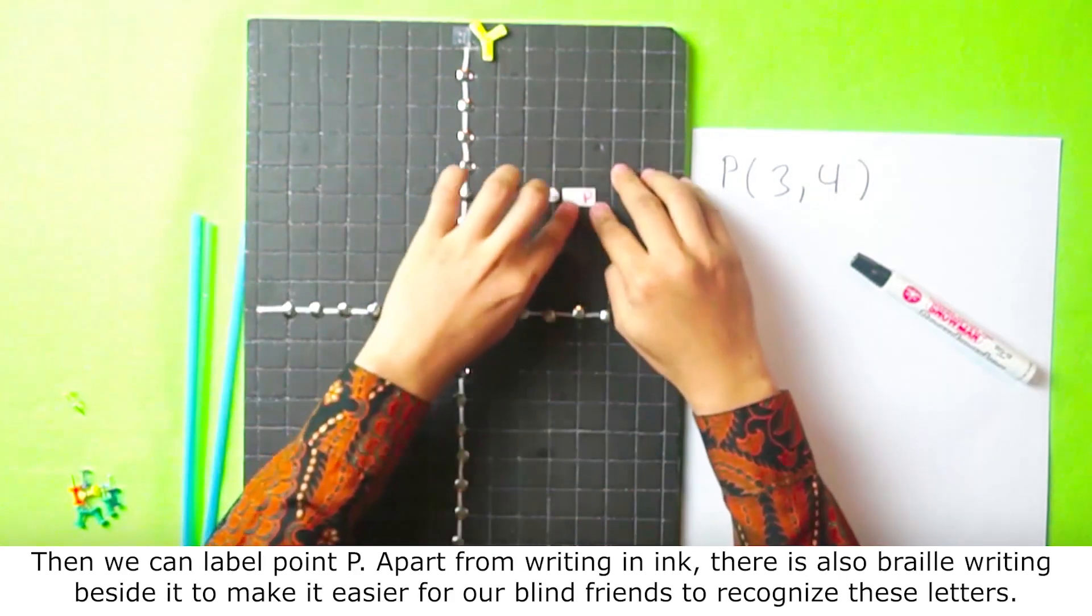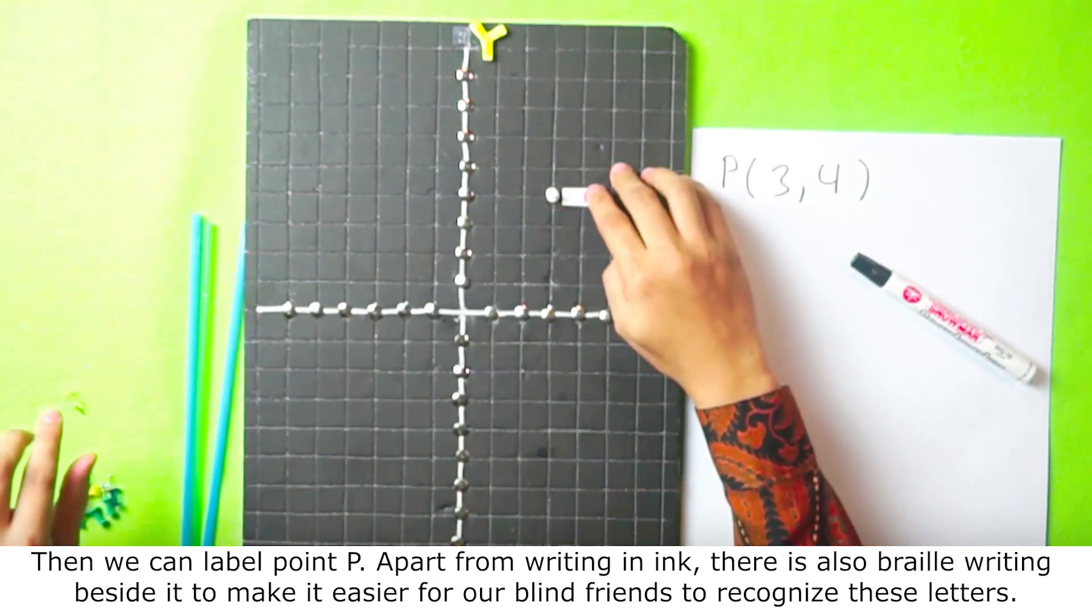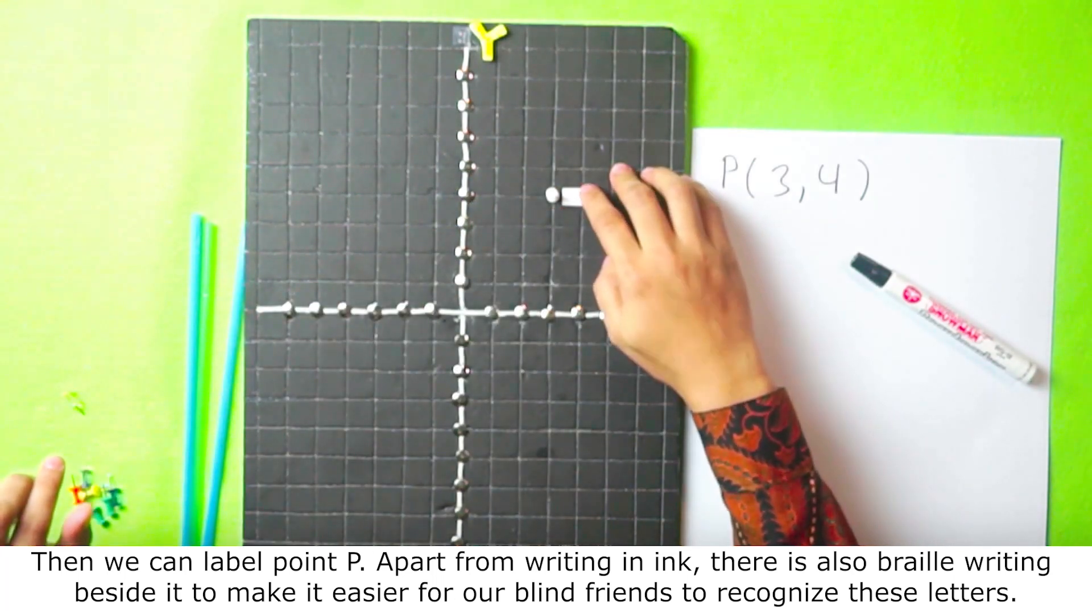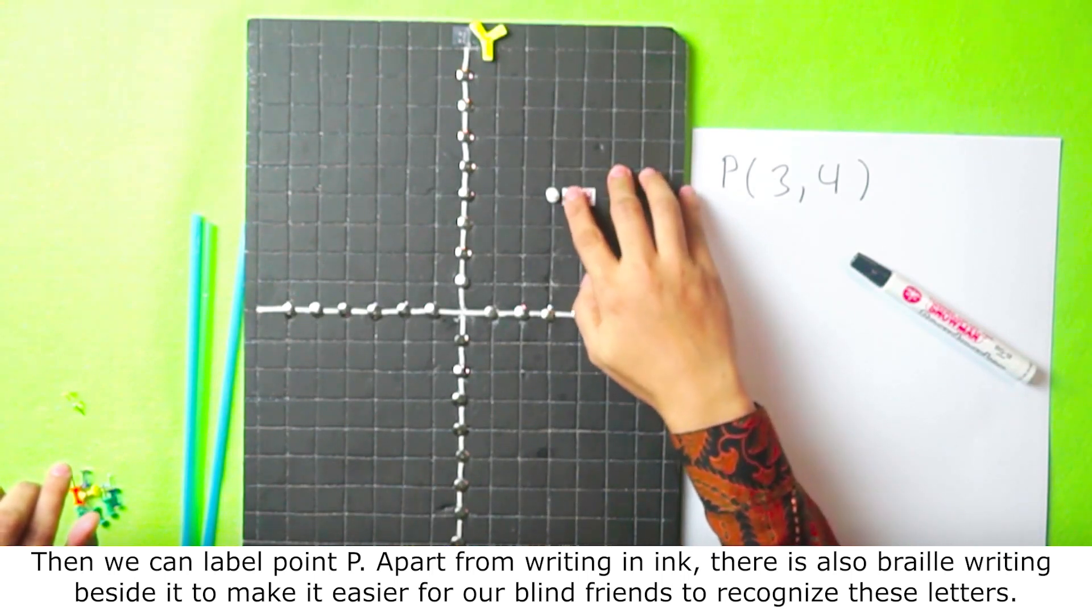Then we can label point P. Apart from writing in ink, there is also braille writing beside it to make it easier for our blind friends to recognize these letters.